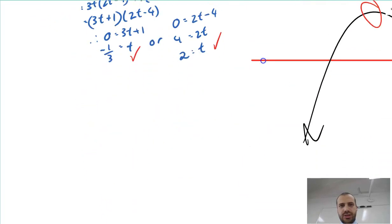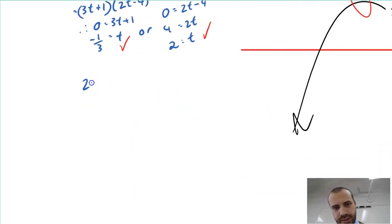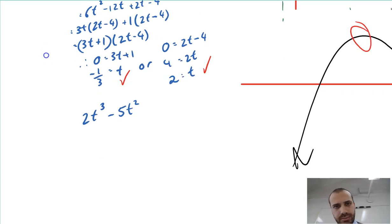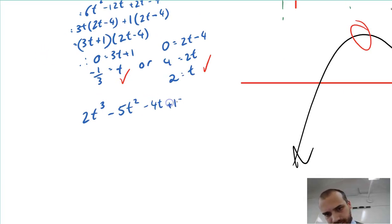So original function, 2t³ - 5t² - 4t + 13. So subbing negative one third into that. I won't do it on screen here because it's a bit boring.